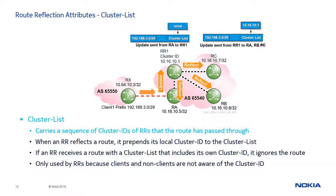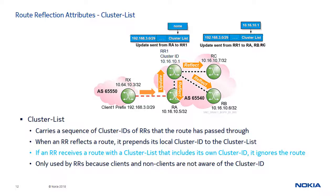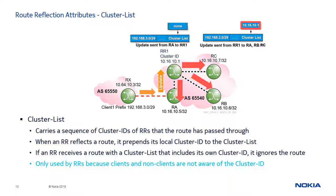The cluster list attribute carries a sequence of cluster IDs of RRs that the route has passed through. Every time a route is reflected, the RR prepends its cluster ID to the cluster list attribute. If an RR receives an update and its local cluster ID is already contained in the cluster list, it discards the update. Note that this attribute is only used by RRs because clients and non-clients are not aware of the cluster ID. In the diagram, AS 65550 sends an update via the eBGP session to router RA. RA propagates the update to RR1 with no cluster list. RR1 prepends its local cluster ID 10.16.10.1 to the empty cluster list, then reflects the route to its clients RA, RB, and RC.